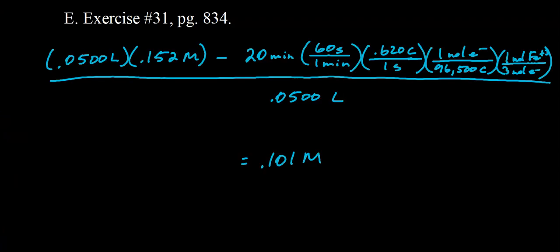All right, so here's the setup. We started off with 50 milliliters of a 0.152 molar solution of iron 3 chloride, which we can then use to find moles of iron 3 that we start off with. This is total moles of iron 3. And then we can figure out how much iron 3 is reduced, how much reacts. That is used to produce the iron metal. So the electric current is run for 20 minutes. So let's convert that to seconds. Our current is 0.620 amps, or 0.620 coulombs per second. Convert that to moles of electrons using Faraday's constant, and then three moles of electrons gained for every one mole of iron 3 that is reduced.